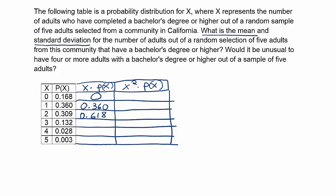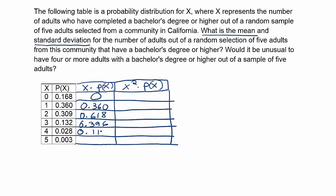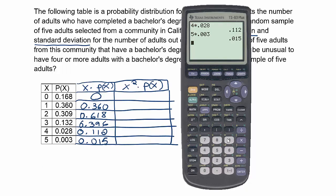If I do three times 0.132, I'll get 0.396, and then I'm going to speed it up a little bit by using our calculator. Okay, so let's do four times 0.028. And we do that, we get 0.112, and then five times 0.003. Okay, so 0.112 and 0.015. Okay, so that's our x times P(x) column multiplied out.